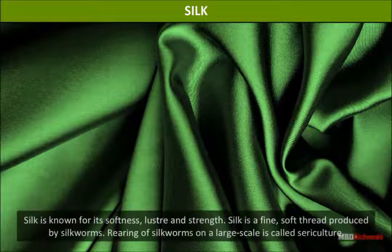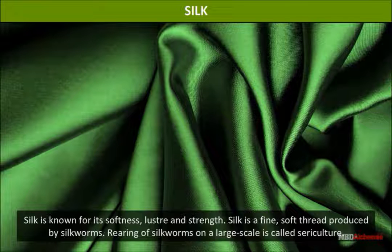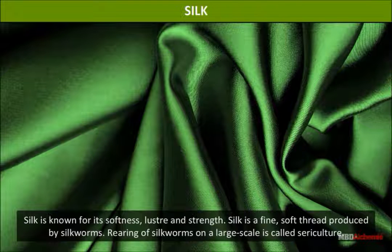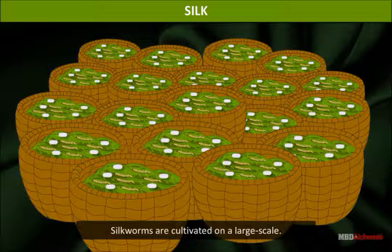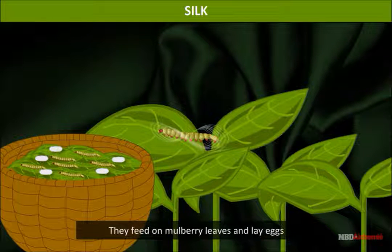Silk: Silk is known for its softness, lustre, and strength. Silk is a fine, soft thread produced by silkworms. Rearing of silkworms on a large scale is called sericulture. In the production of silk, silkworms are cultivated on a large scale and feed on mulberry leaves, and lay eggs.